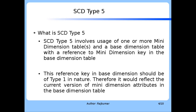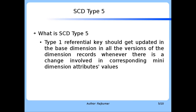That's the exact difference between a SED type 4 and a SED type 5. This reference key in the base dimension should be of type 1 in nature. Therefore, it would reflect the current version of mini dimension attributes in the base dimension table. The type 1 referential key should get updated in the base dimension across all versions of the dimension records, and this should happen whenever there is a change in corresponding mini dimension attribute values.